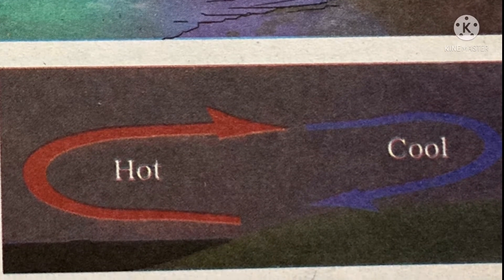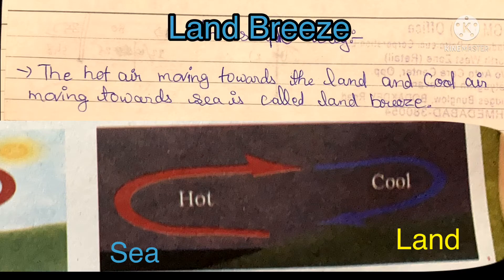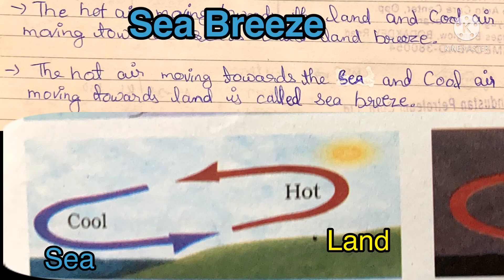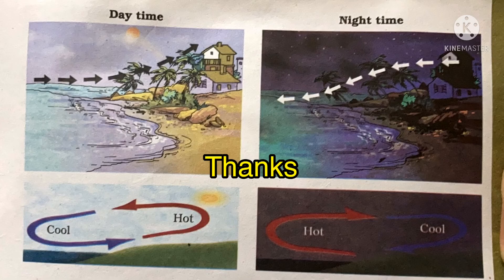In simple terms, the hot air moving towards the land and the cool air moving towards the sea is called land breeze. And the hot air moving towards the sea and the cool air moving towards the land is called sea breeze. Thanks for watching.